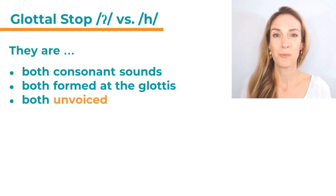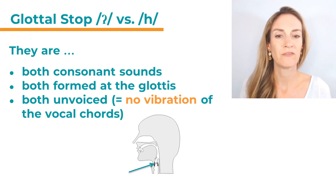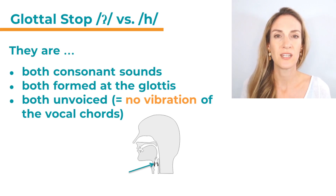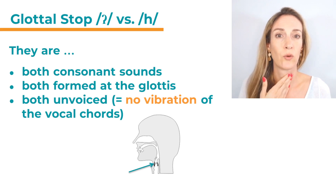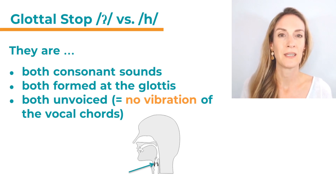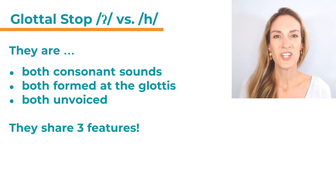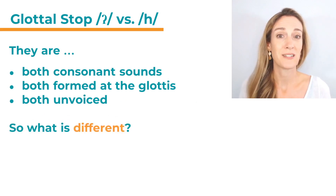They are also both unvoiced. Let's quickly remind ourselves what that means. That means there is no vibration of the vocal cords when we make those sounds — no continuous vibration. If you make any vowel sound, like 'ah' or 'e', there is very clear vibration of the vocal cords, and that does not happen in the glottal stop and also not when we produce an h. So they share these three features, and the question is now: what is different?